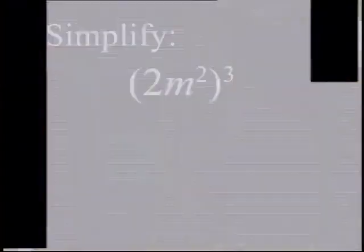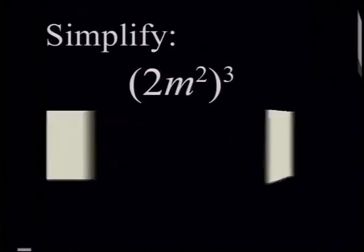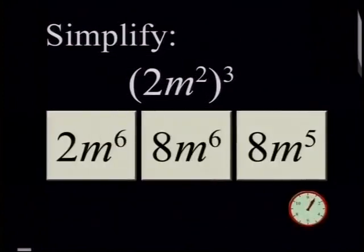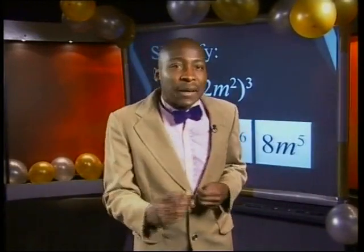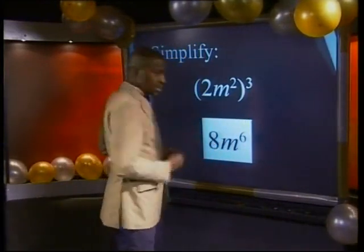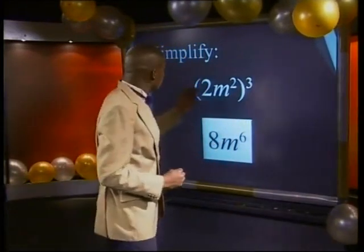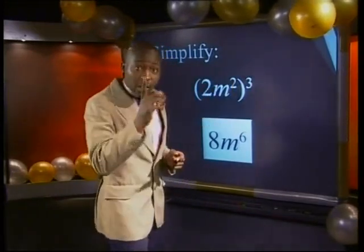Ready for another one: 2m to the power of 2, all to the power of 3. Does raising a power to a power sound familiar? Did you remember to raise each factor in the bracket to the power of 3? If you did, you would get 8m to the power of 6. Don't forget that the 2 is cubed and you must multiply the exponents 2 and 3 — not add them.